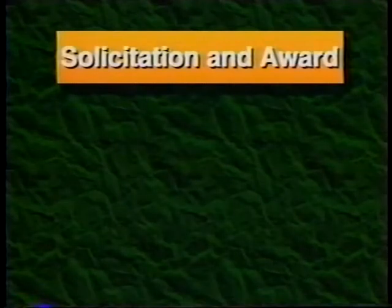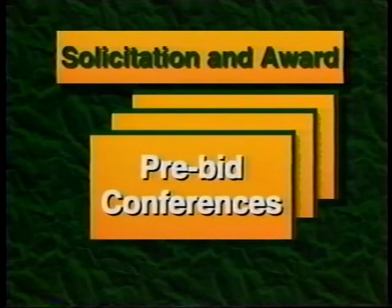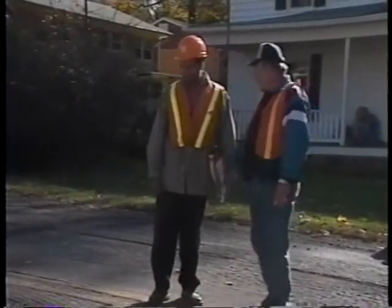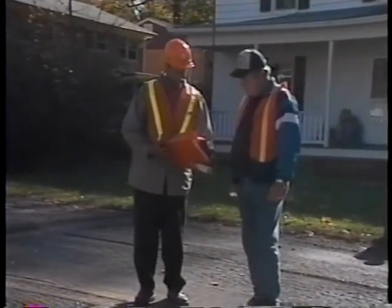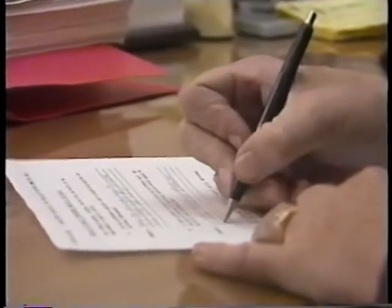There are five components to the solicitation and award stage: contractor interest, contractor pre-qualification, pre-bid conferences, bid analysis, and contract award. Agency personnel should use time at informal meetings, contractor association meetings, or even job sites to determine if there is contractor interest. Another method is by written survey. Most contractors respond indicating an interest in contract maintenance. In some parts of the world, contractors may not have highway maintenance experience, so the agency should hold maintenance workshops.